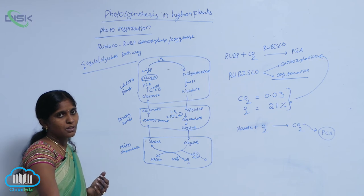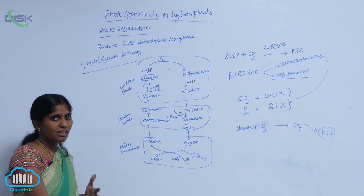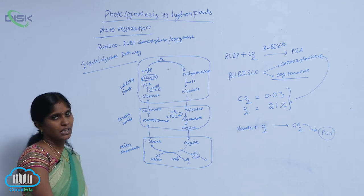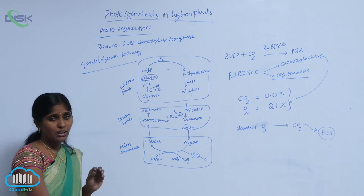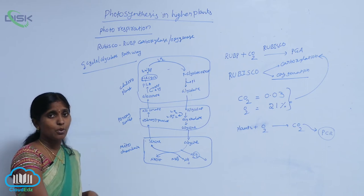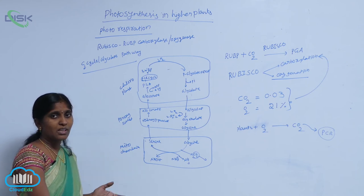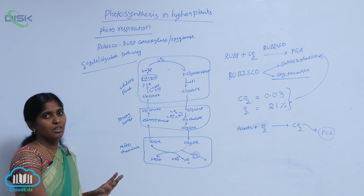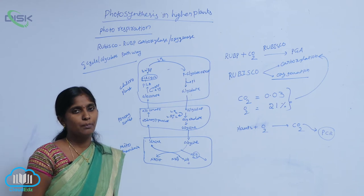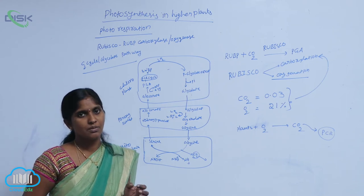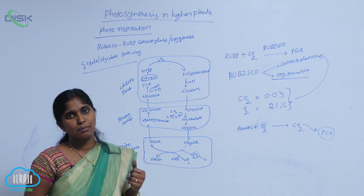In the presence of light, the plants absorb oxygen and they release CO2. No ATP is synthesized and no starch is synthesized, so it is a wasteful process for the plant. The C3 plants cannot escape from photorespiration, so this phenomenon is common to C3 plants.